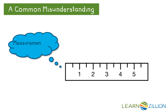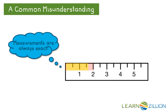A common misunderstanding some students have is thinking that measurements are always exact. We can see the red highlighting showing exactly two. Then we can see the yellow highlighting showing more than one and one half and almost two. Since the measurement is just a little less than two and more than one and one half, we can say that this measurement is almost two.